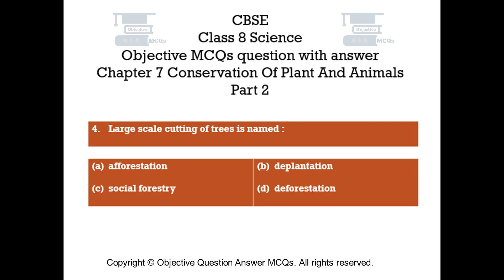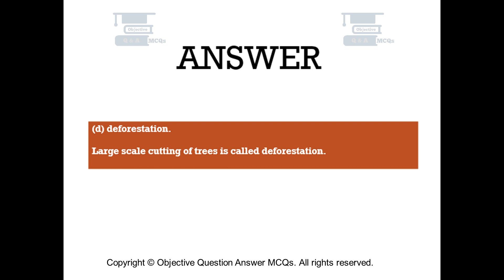Question number 4. Large scale cutting of trees is named: Option A Afforestation, Option B Deplantation, Option C Social Forestry, Option D Deforestation. The right answer is Option D — Deforestation. Large scale cutting of trees is called deforestation.